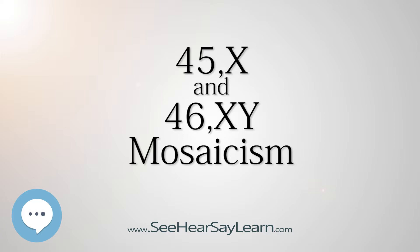Psychomotor development is normal. As the gonads may not be symmetrical, the development of the Müllerian duct and Wolffian duct may be asymmetrical too. Because of the presence of dysgenetic gonadal tissue and Y-chromosome material, there is a high risk of the development of a gonadoblastoma.